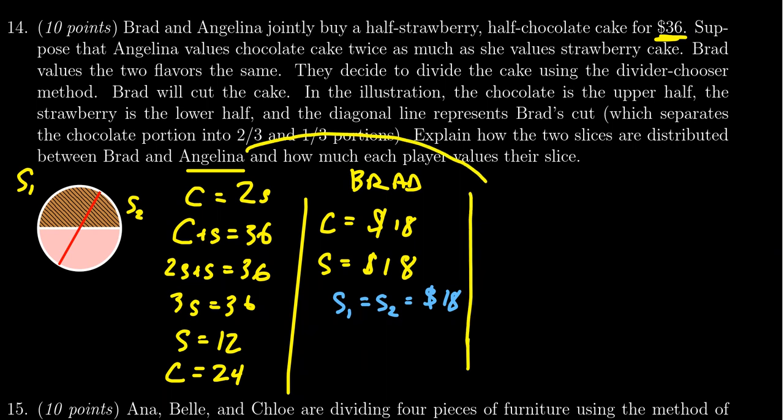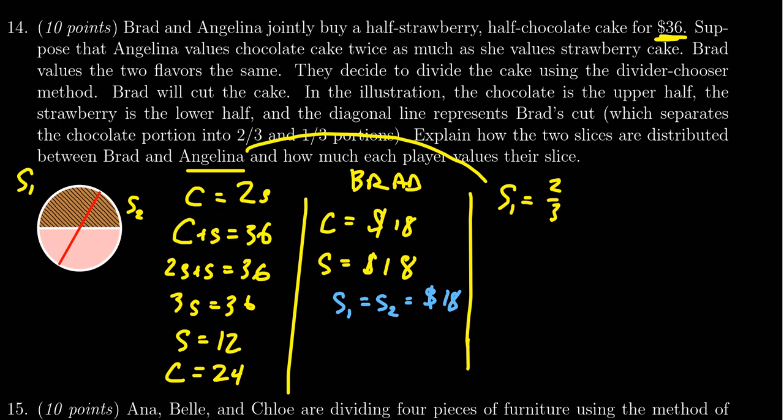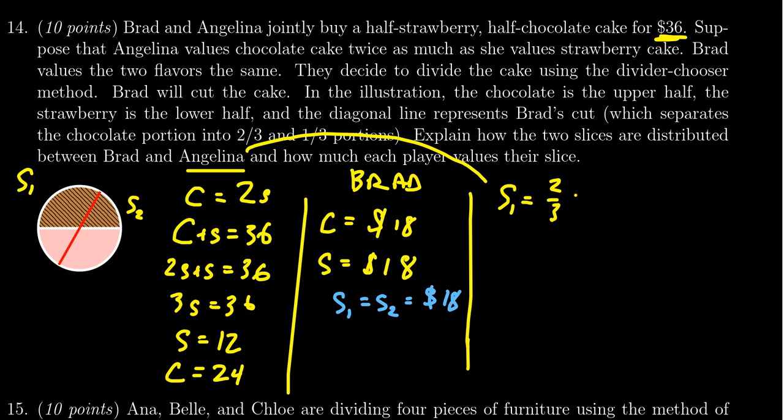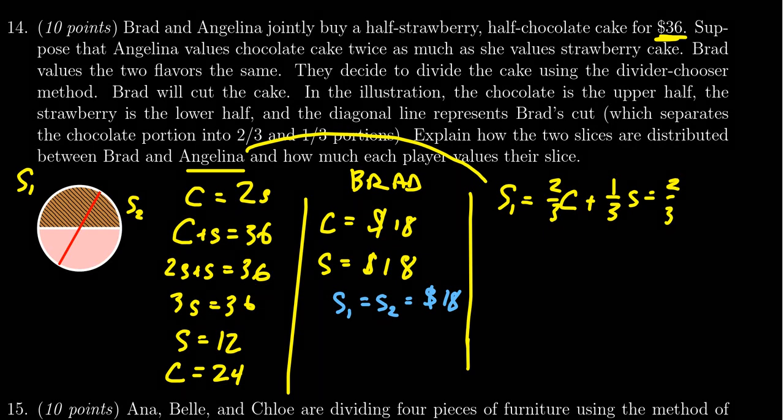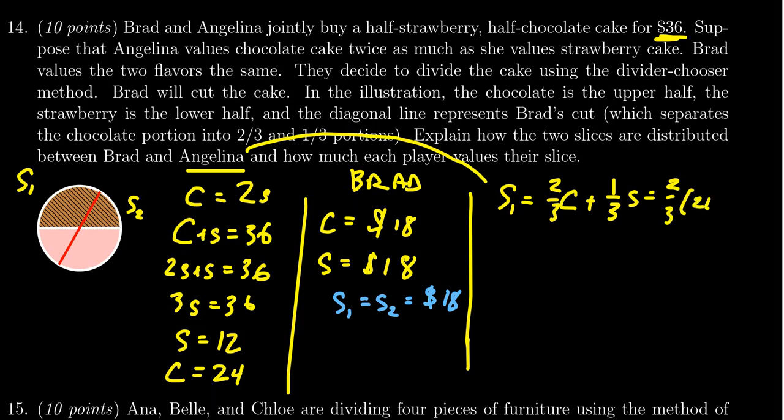Coming back to Angelina here, we want to calculate how much she values the two shares. So share one is going to have two-thirds the value of the chocolate slice C there, plus one-third the value of the strawberry slice, for which the chocolate slice we've already figured out is worth $24 to her and the strawberry is worth 12.